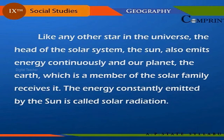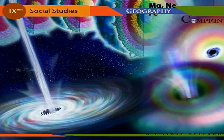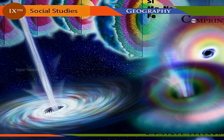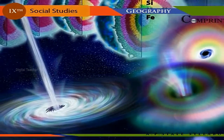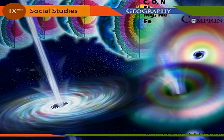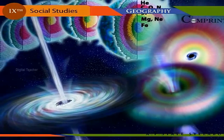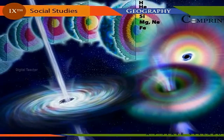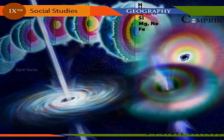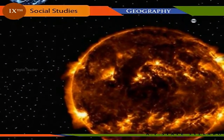The energy constantly emitted by the Sun is called solar radiation. Heat is constantly generated inside the Sun, which is a gigantic gaseous sphere, through a process called nuclear fusion, which is then radiated into space.